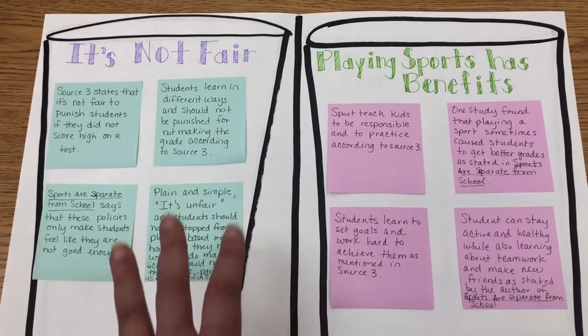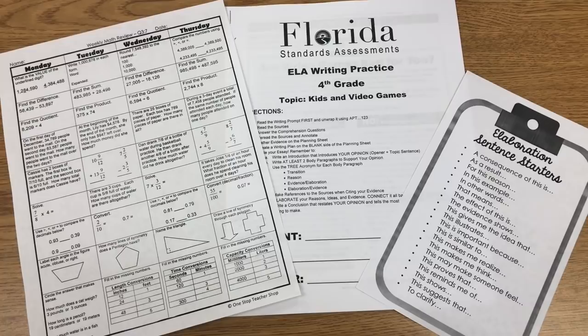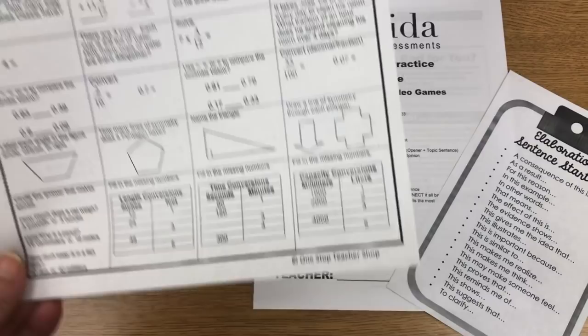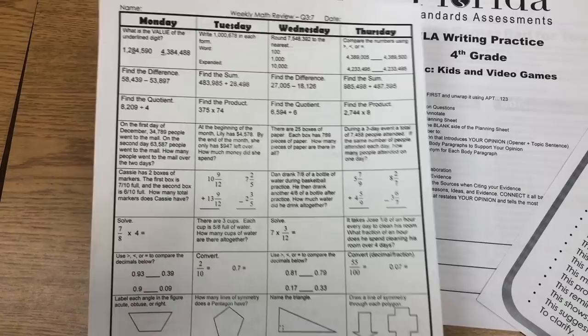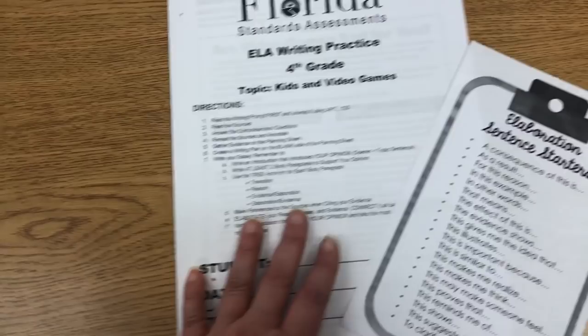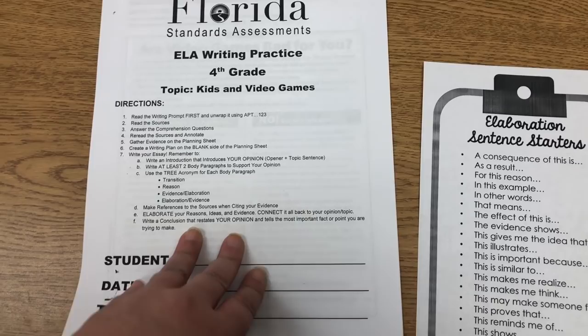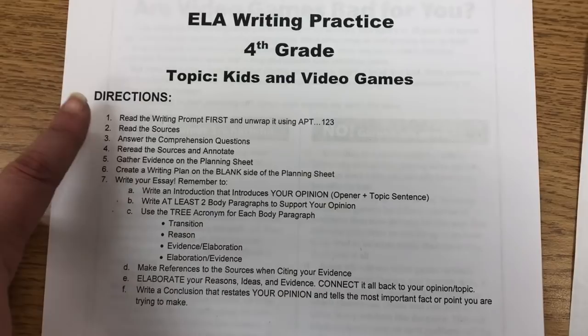Now my homework is changing a little bit this week — we're not doing spelling or vocabulary. We are doing our weekly math review, which comes from One Stop Teacher Shop, and it reviews everything we've gone over up to the current chapter. It's due Friday — I usually give homework assignments at the beginning of the week and they're due at the end. Then for reading and language arts, I have a text set from Scholastic News that talks about video games and whether video games are good or bad for students.